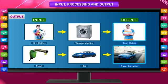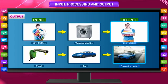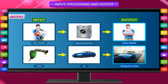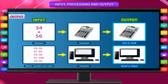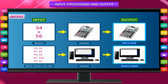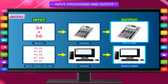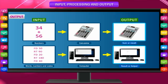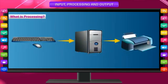Input: Dirty clothes → Washing machine → Output: Clean clothes. Input: Petrol → Car → Output: Energy for running. Input: Numbers → Calculator → Output: Sum or result. Input: Words, numbers, and codes → Computer → Output: Result.